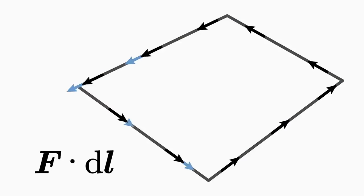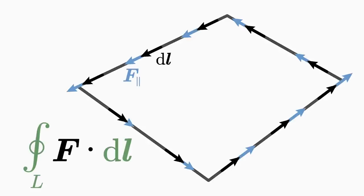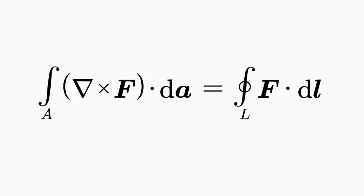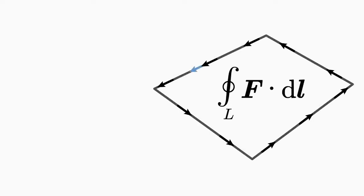Then the scalar products for each location on the loop are summed up using the integral. Such an integral in which small line elements are summed up is called a line integral. The line integral measures how much of the vector field f runs along the line L. Because the line is closed, this scalar product returns to the same point where the summation started. The closed line integral thus indicates how much of the vector field f rotates along the loop L.